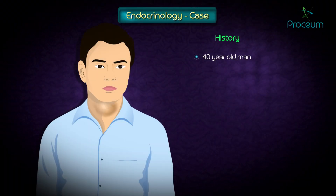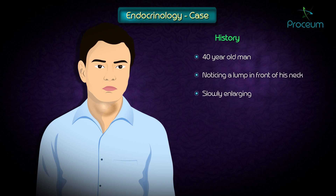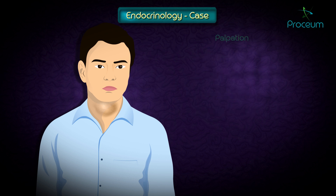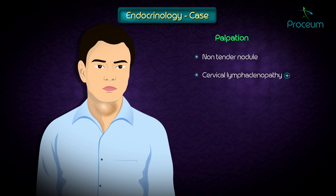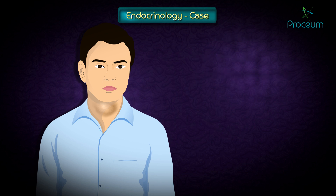A 40-year-old man presents to your office after noticing a lump in front of his neck that has been slowly enlarging. He denies any other symptoms. Upon palpation, the lump is a non-tender nodule, and upon further examination you find some cervical lymphadenopathy as well. This finding prompts you as a doctor to become concerned regarding the nature of the tumor and decide to investigate further.